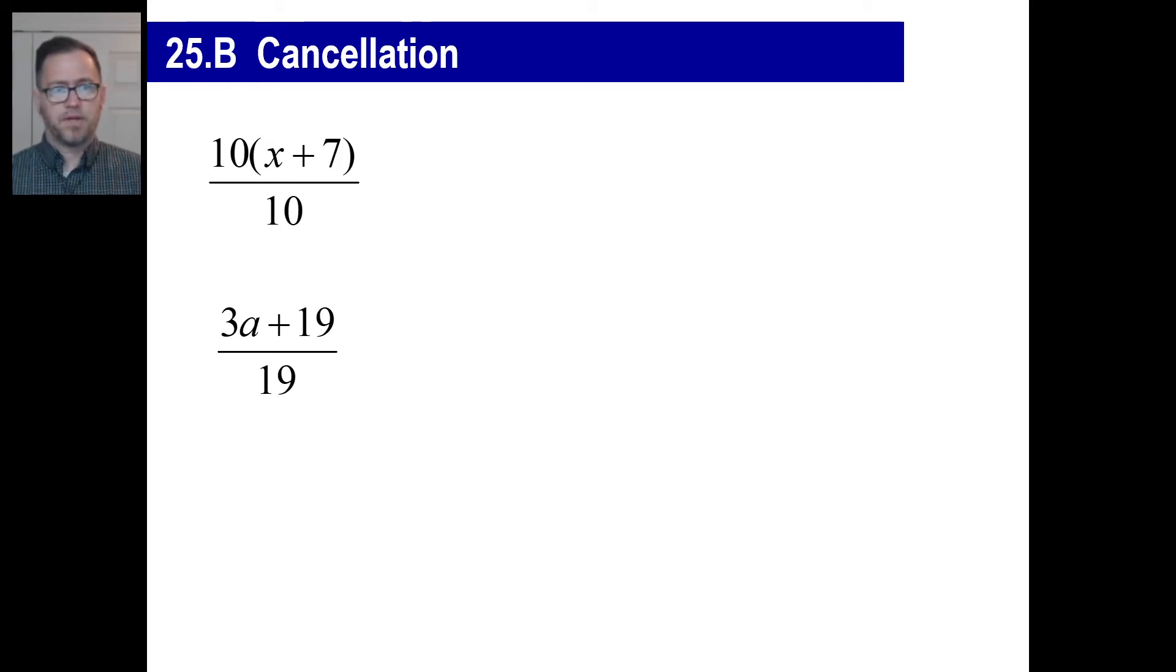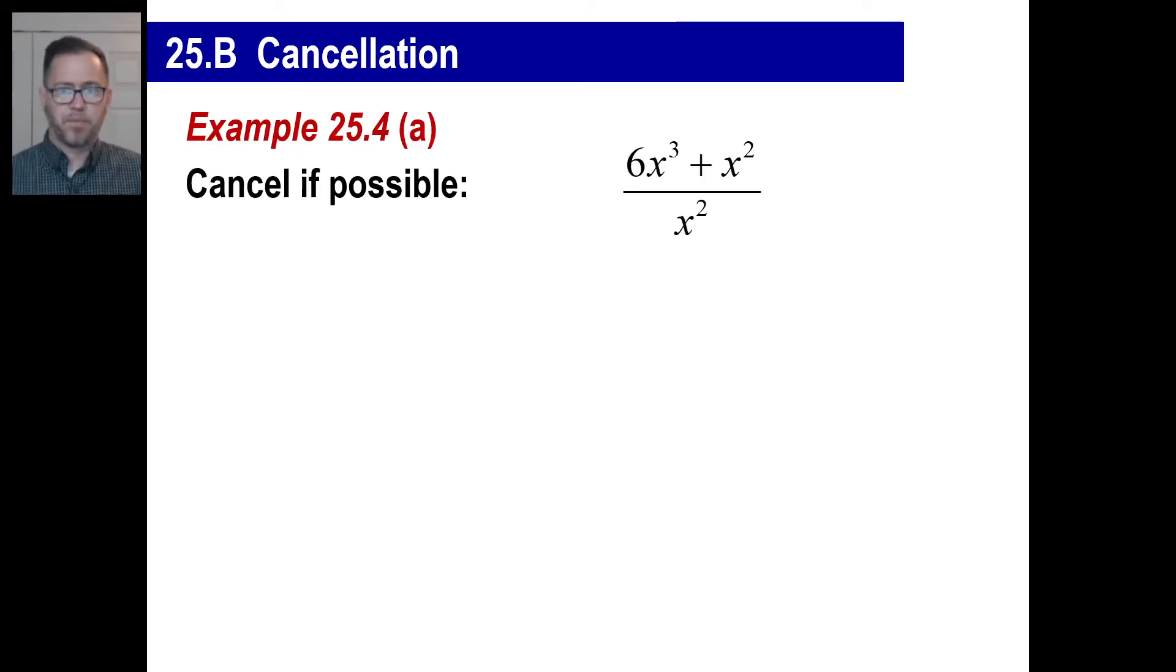So if it works for actual numbers, it'll work for this kind of stuff too. If you want to pause and copy all of these, you can. But look at the top one. We can cancel the tens, right? Because the 10 is being multiplied by the x plus 7, so those are gone. So the answer is just x plus 7. This one, what can we do? Cancel the 19's, right? No, we can't cancel the 19's. I get you. That's a plus 19. You can't do anything with that. Nothing at all you can do. There's no reducing of any kind you can even do with this bottom fraction at all because the 19 is added to the 3a. You have to kind of clump it together and keep it together.